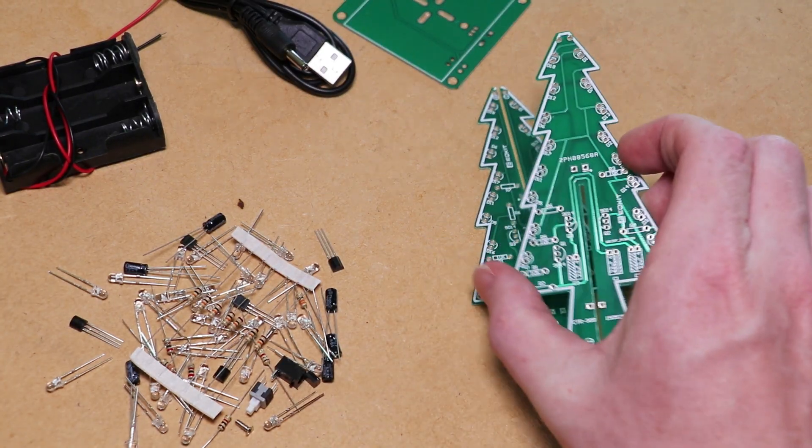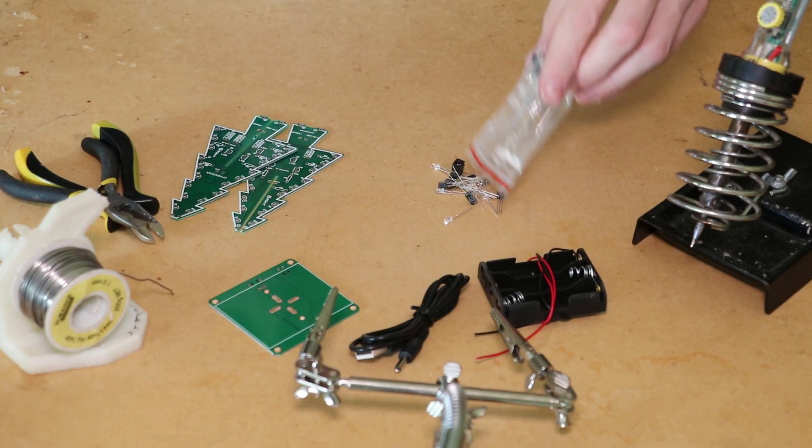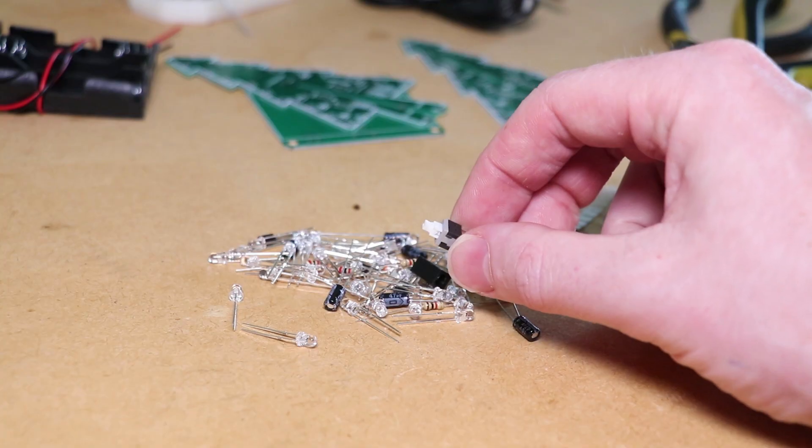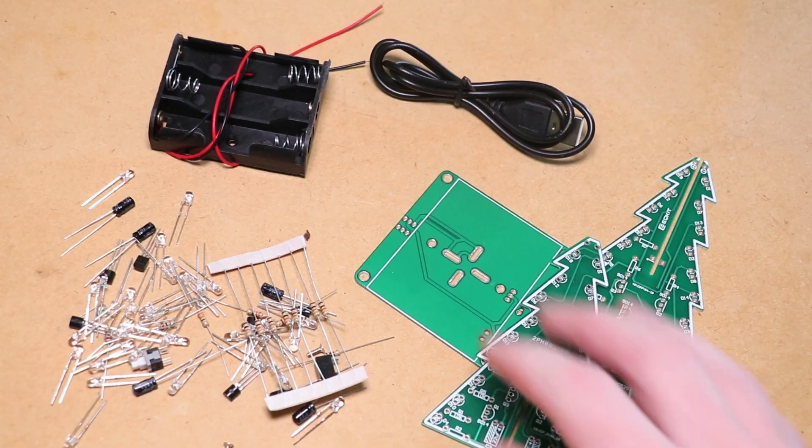For this kit there are 3 PCBs, some LEDs, capacitors and resistors, along with a power jack, AA battery pack, and a switch to turn the tree on and off.